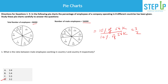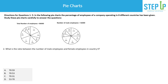The second question uses the same two pie charts and asks: what is the ratio between the number of male employees and female employees in country 2? So we need to find male employees in country 2 divided by female employees in country 2.